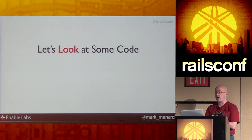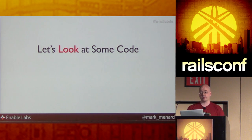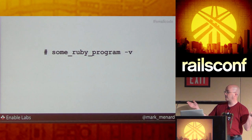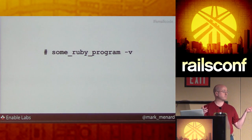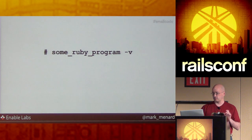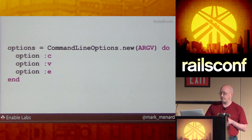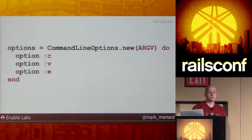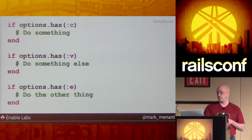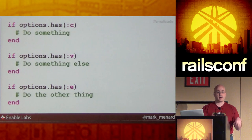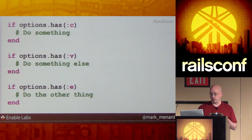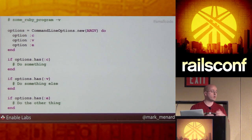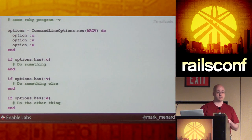I'm going to use the example of a command line option parser that handles Booleans to start with, and then we're going to see where the future takes us. I want to be able to run some Ruby program with dash-v and handle Boolean options. In my Ruby program, I want to define what options I'm looking for using a simple DSL, and then consume it like: if options has a particular option, do something.